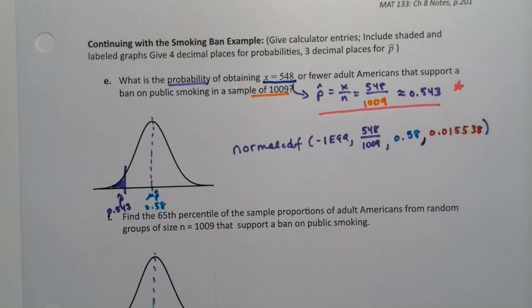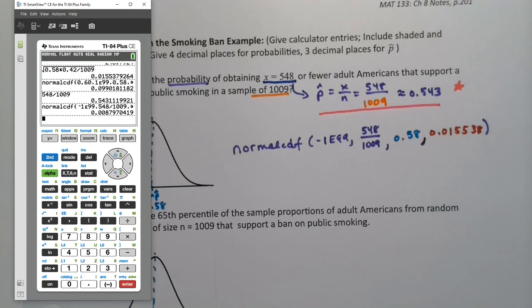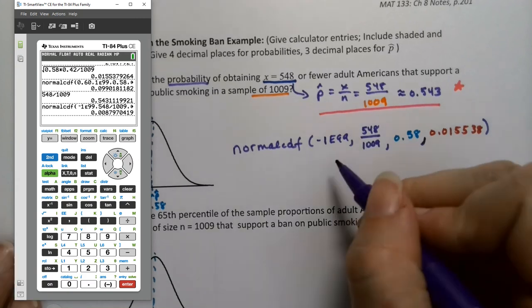Now we can type that into a calculator or into StatCrunch. Second distribution, normal CDF, negative one second comma to get that e in there, 99. And then type the fraction 548 divided by 1009. It'll be more accurate than using 0.543. You still want to figure out the 0.543 because it helps you know if it's on the left or the right side. And it was on the left. And we see it's 0.008.